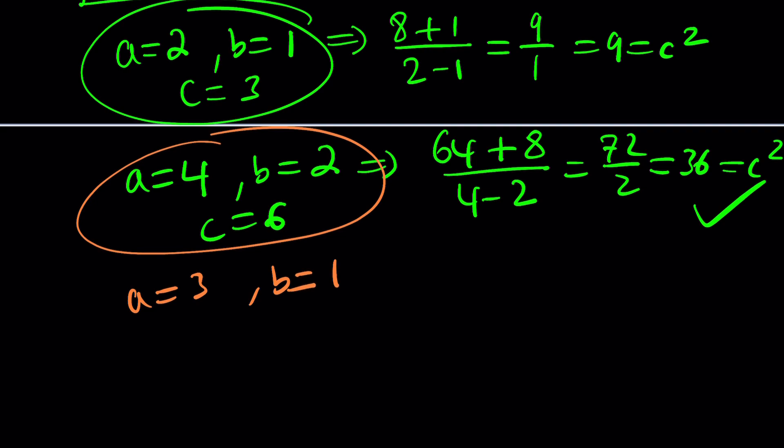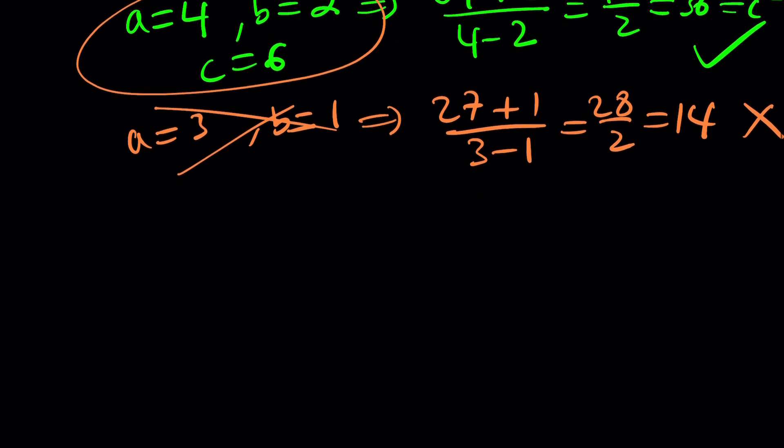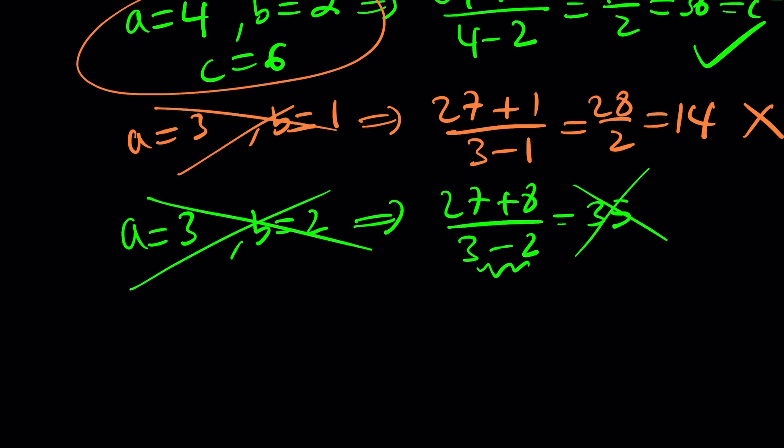But, again, we need to keep checking. Let's try to find something that doesn't work. a equals 3, b equals 1. If a is equal to 3, then it's going to be 27, plus 1, divided by 3 minus 1. This is 28, divided by 2, which is equal to 14. 14 is not a perfect square. It does not work. So, these values are not going to work. Let's check the next thing. How about a equals 3 and b equals 2. We get 27 plus 8, divided by 3 minus 2, which is 1. That's 35. So, that is not a perfect square either.